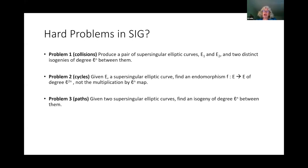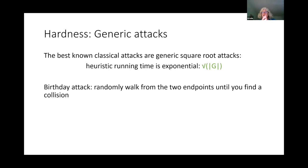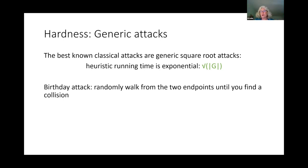On that side of the picture, the best known algorithms we have today for attacking this system are still what we call generic algorithms. Generic attacks in cryptography are ones that run basically as if the underlying object is a black box — there's nothing special about the fact that the vertices are actually elliptic curves. We're just treating it as a graph with vertices that have labels. One approach for generic square-root attacks is to simply walk around the graph at random.